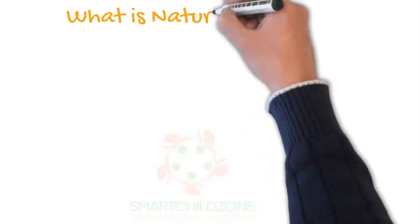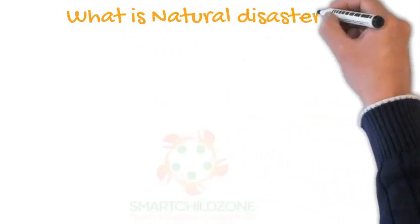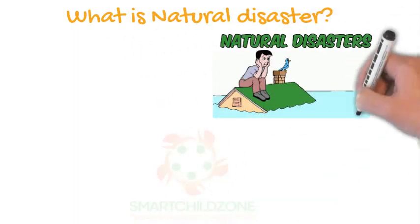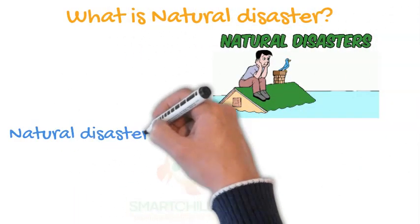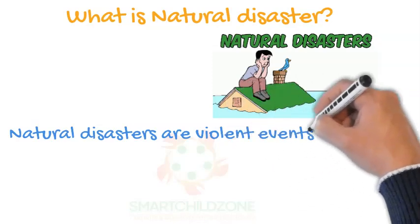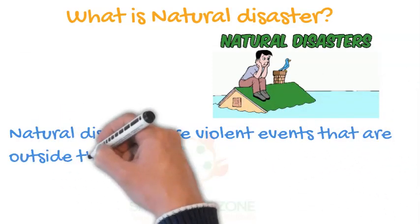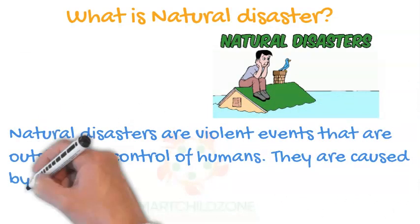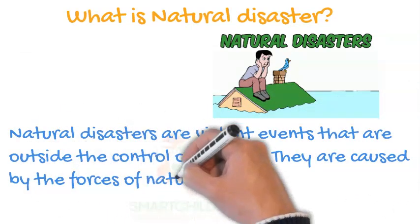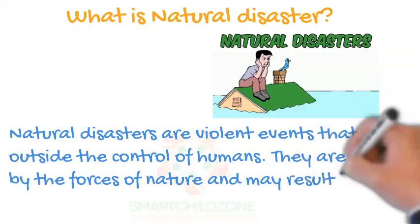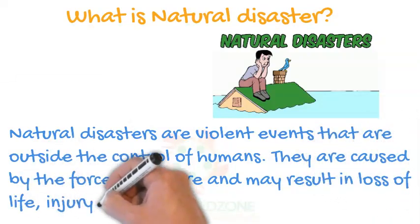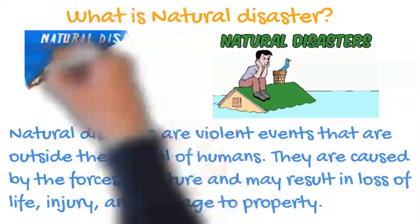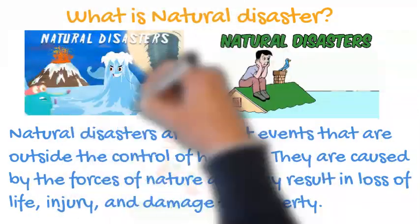What is a natural disaster? Natural disasters are violent events that are outside the control of humans. They are caused by the forces of nature and may result in loss of life, injury, and damage to property.